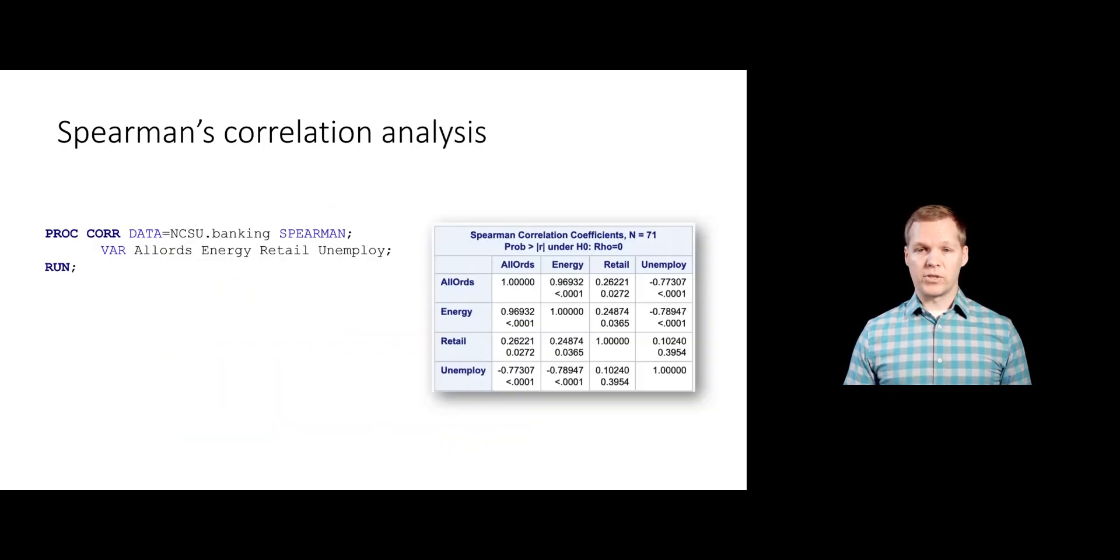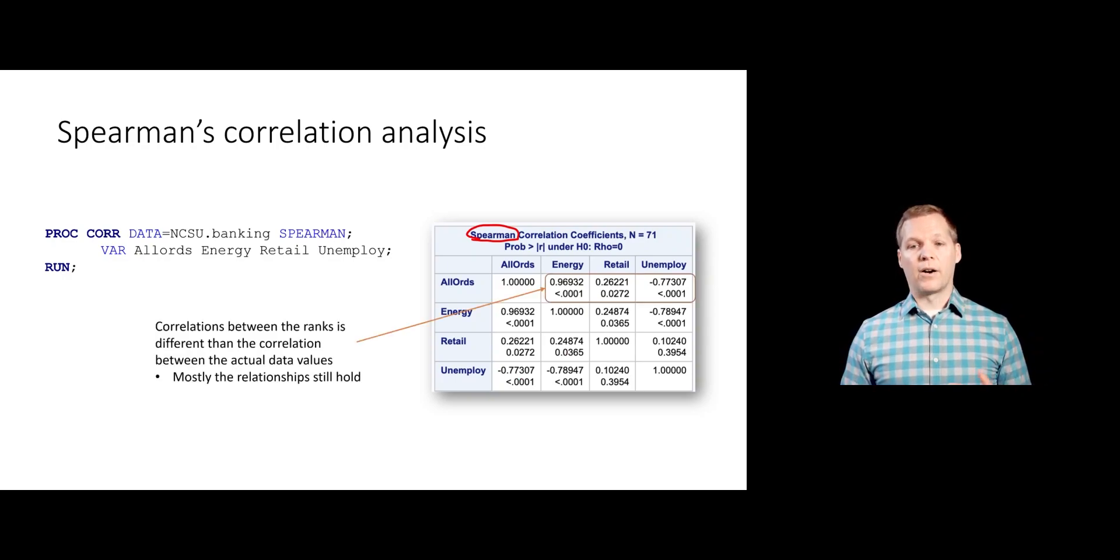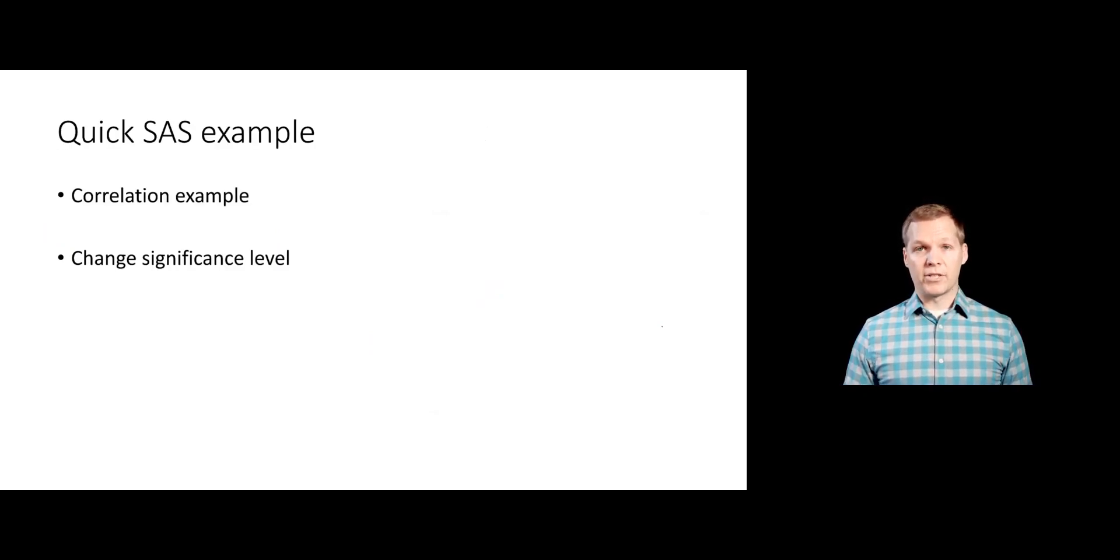How we get that output, just like we did before, we're just going to add the Spearman option on the PROC CORR statement. Now you can see it says these are Spearman correlations. The p-values and the estimates associated here are now for using the Spearman way to estimate these things rather than the Pearson way. We usually do end up seeing roughly the same thing unless you have some really large outliers. Here we're seeing roughly the same information. That wraps up the ideas of correlation analysis. Let's jump into SAS and see a quick example.